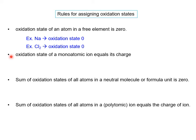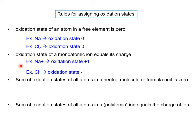The next rule is that the oxidation state of a monoatomic ion is equal to its charge. A monoatomic ion is an ion made up of just one atom of an element by itself. Whatever charge is shown is the oxidation state of that ion. For example, Na with a charge of plus one has an oxidation state of plus one. Likewise, Cl⁻ has an oxidation state of minus one.